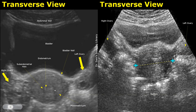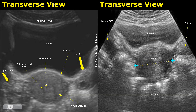These are transverse images showing the bladder, the uterus, and the ovaries. This is the abdominal wall, followed by the distended bladder. You can see the uterus in the middle and the ovaries on its sides. This is the myometrium. The subendometrial halo can also be seen here, appearing as a subtle hypoechoic circle around the endometrium. Within the ovaries, you can see the follicles — one in the left ovary and around five follicles in the right ovary.